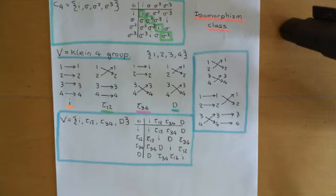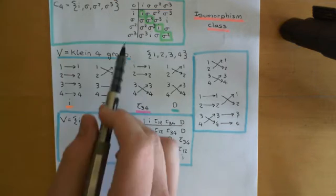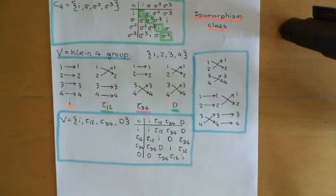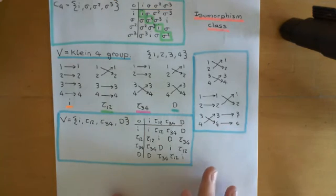Welcome back to this next video in which we are discussing group isomorphisms. We've now discussed the concept of what it means for two groups to be isomorphic to one another, the concept of what an isomorphism actually is, and I've given you an example of two groups that are not isomorphic — C4 and the Klein 4 group. What I now want to give you is an example of two groups that are isomorphic to one another, and I find that very deep.